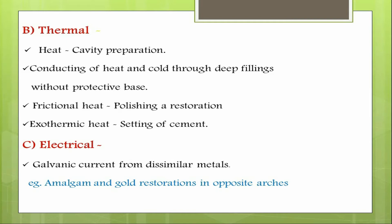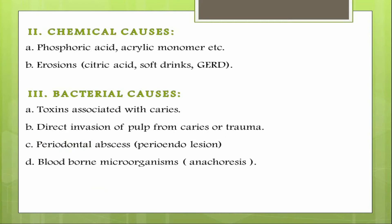Chemical causes of pulpal injury include phosphoric acid, acrylic monomer, etc., which can reach the pulp through the dentinal tubules. It could also be due to erosion from acids such as citric acid from soft drinks, or GERD - gastroesophageal reflux disease - a condition whereby acidic components of the stomach are regurgitated into the oral cavity causing erosions.